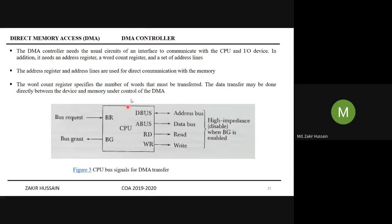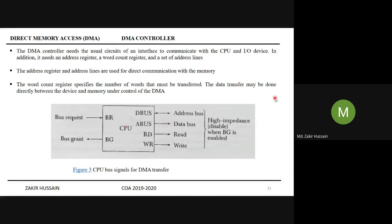Last time we discussed this DMA controller. We saw how the CPU is getting a bus request from the DMA, how these lines are going into high impedance state, and then the bus going to the memory - that bus control is transferred to the DMA. From there on, the control of this bus is from IO devices to the memory. The bus control is not between memory and the CPU, rather it is between memory and the DMA and IO devices.